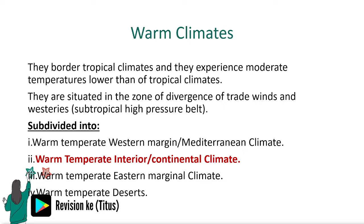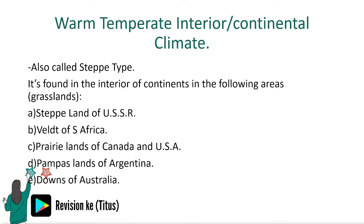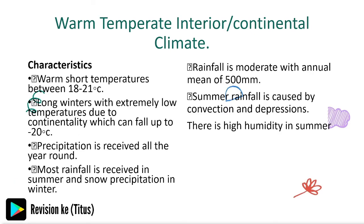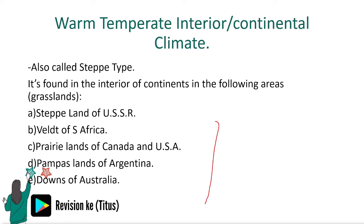The warm temperate interior or continental climate is found in the interior of continents: the steppe lands of the USSR, the velds of South Africa, the prairie lands of Canada and USA, the pampas lands of Argentina, and the downs of Australia. This is highly examinable — see how these specific details relate to our next topic, which is vegetation.